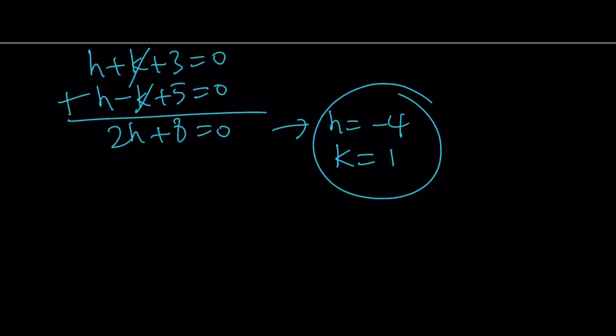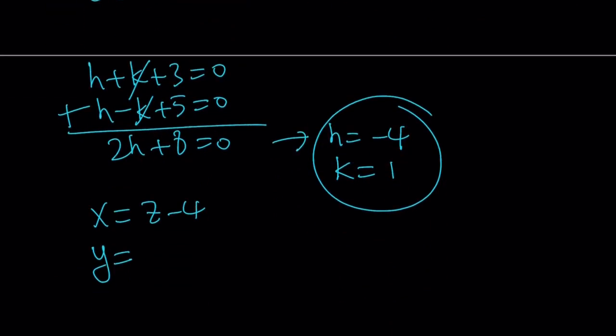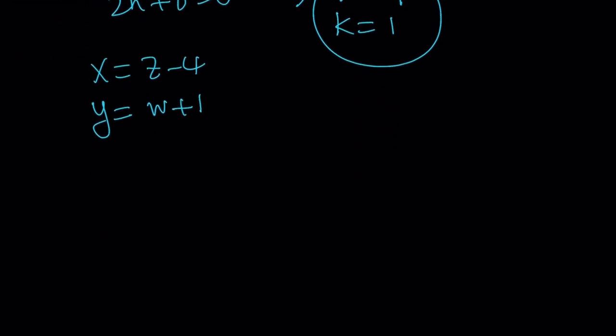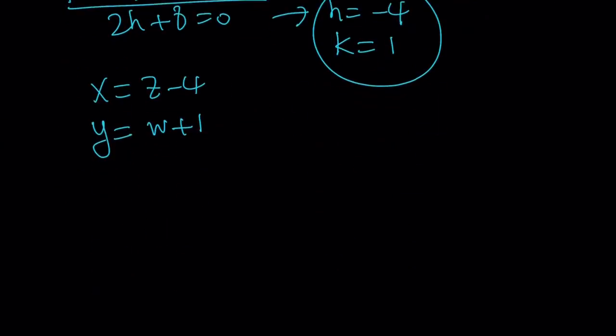So, we've got the h and k values, which means we can plug them in and just write x and y in terms of z and w. So, x is going to be z minus 4. And y is going to be w plus 1. So, these are going to be the expressions that I'm using at the end, but we're going to solve this equation in z and w first. So, this is our differential equation in terms of w and z.